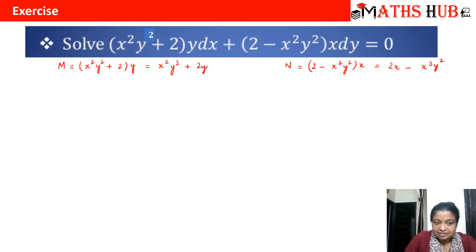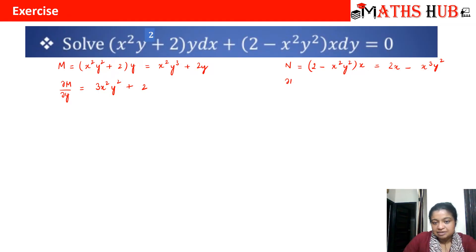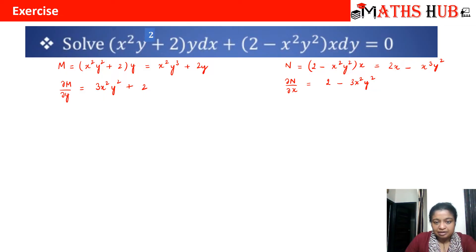For testing exactness, let's calculate ∂M/∂y. So ∂M/∂y = 3x²y² + 2. Similarly, ∂N/∂x = 2 − 3x²y². You can see that ∂M/∂y is not equal to ∂N/∂x, so the equation is a non-exact differential equation.